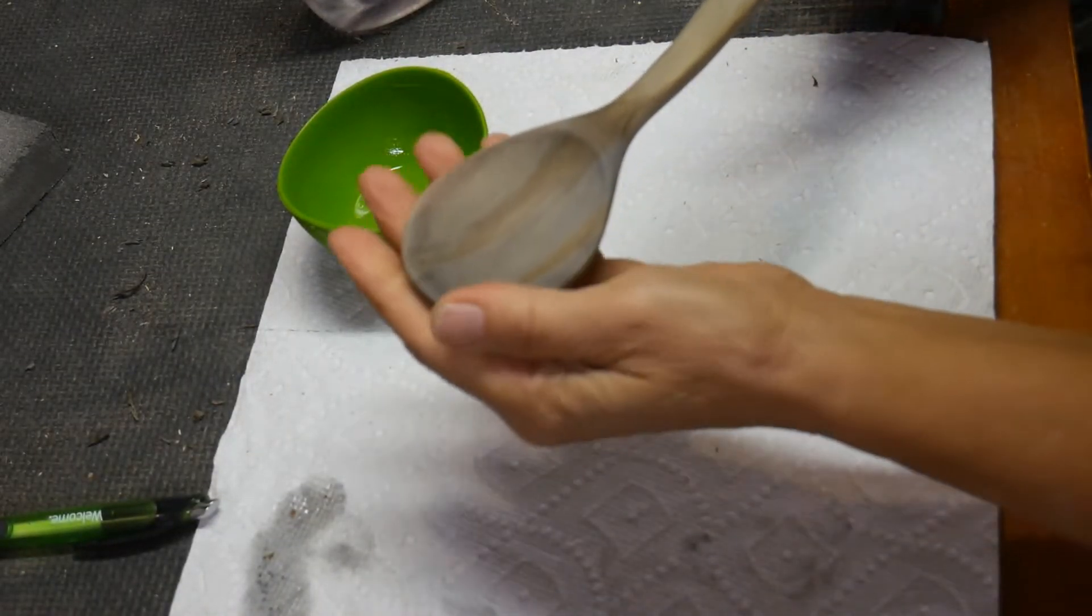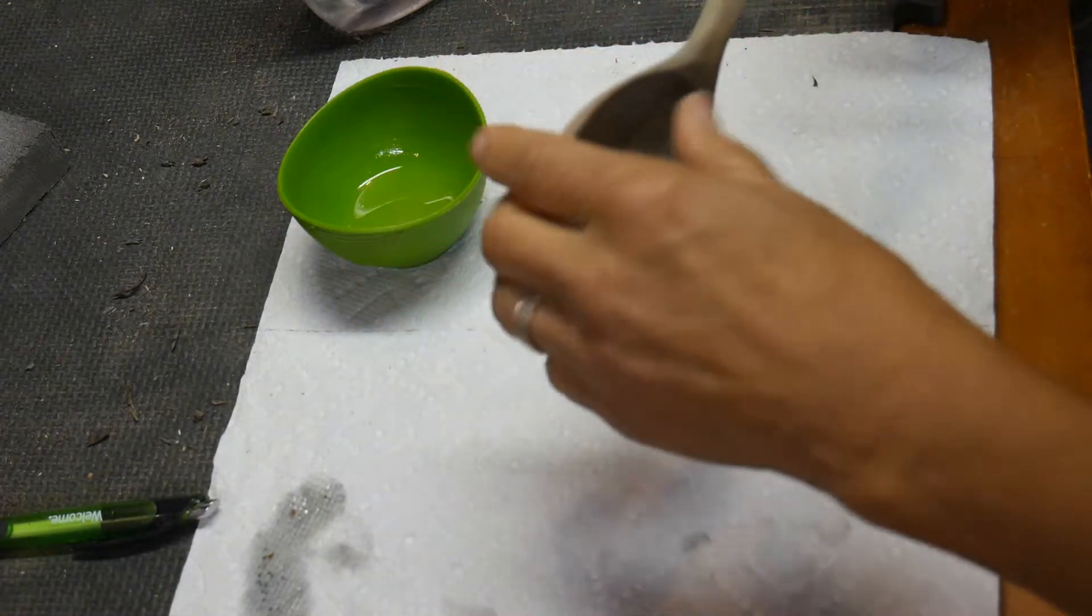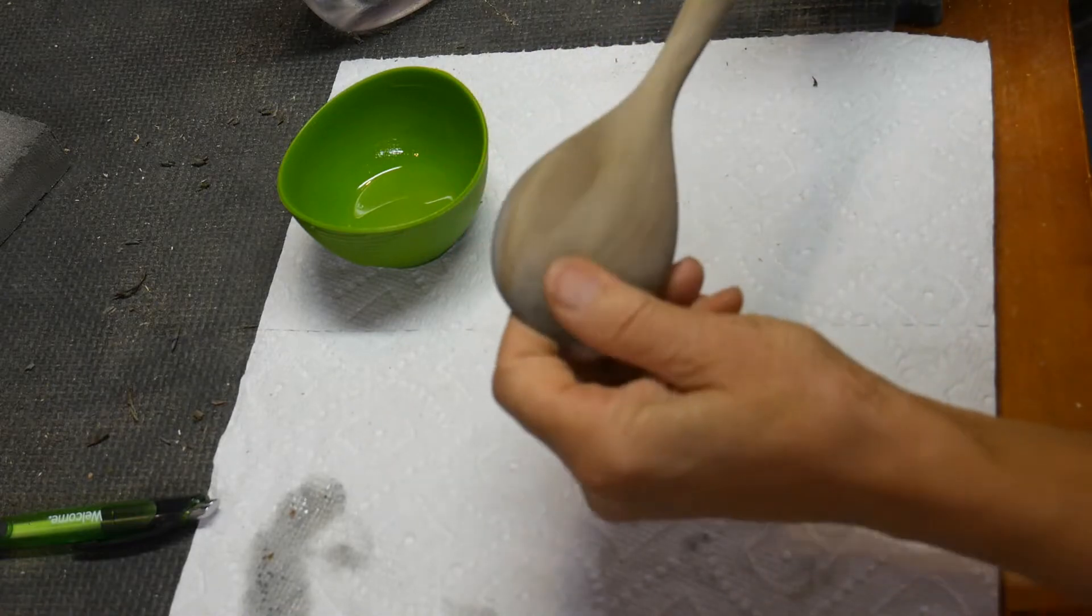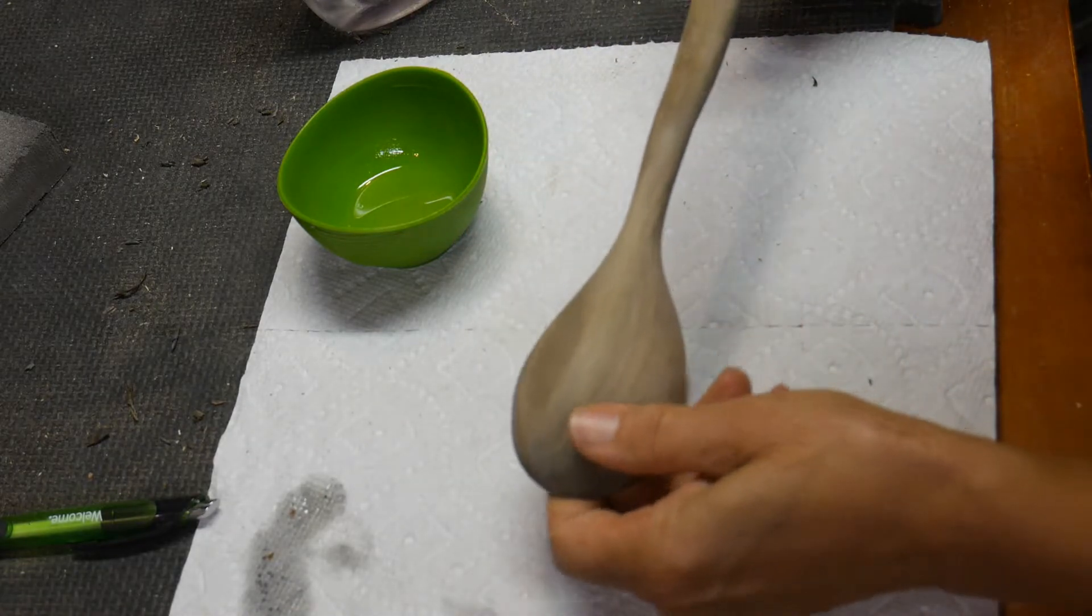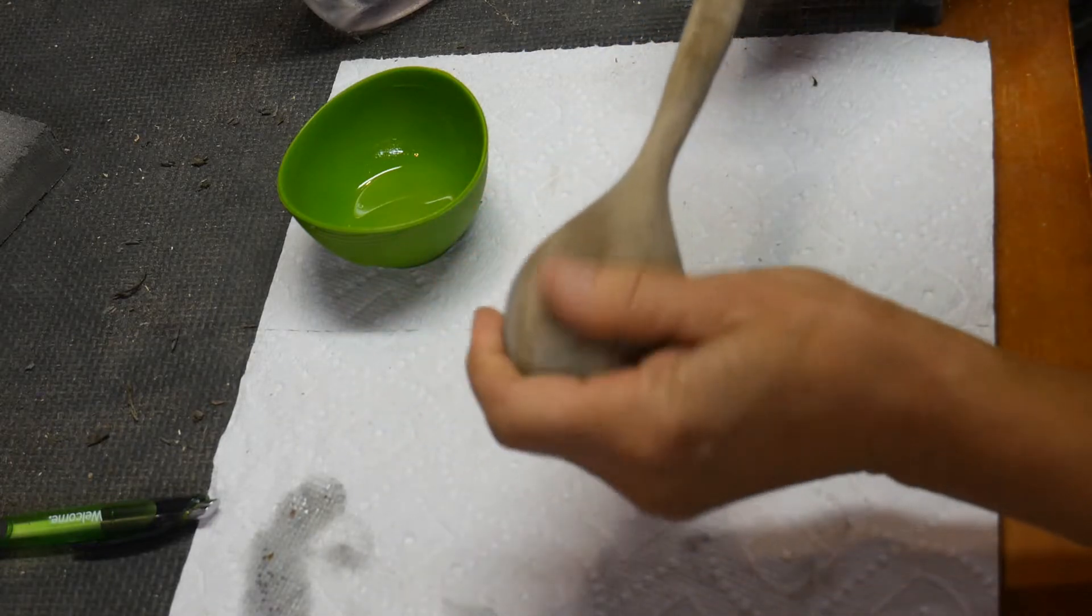I got this wet to raise the grain and I sanded it down once again with 400 grit sandpaper. If you don't think that's enough, give it another try. Wet it down again, let it dry and sand it again until you get that smoothness that you want.